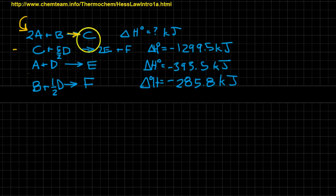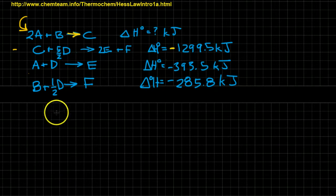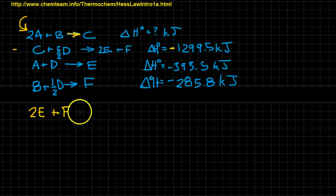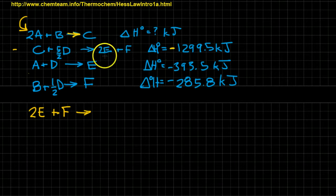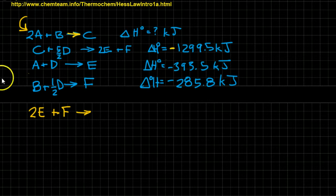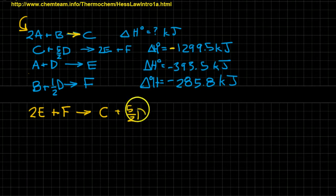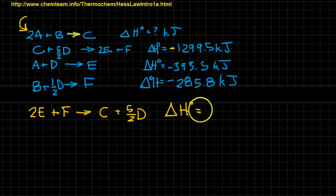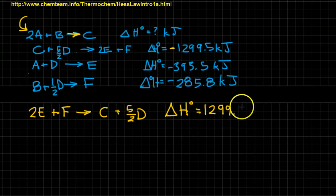So I'm going to start with this one first, because I want to flip that whole thing over, and then I'll get to the value I want. But if I do that, I have to change this negative sign to a positive. That's what happens when you flip them over. So I'm going to start with that. 2E plus F yields, because we're just doing it backwards, 2E plus F yields C plus 5 halves D. And that gives us this value right here, 1299.5 kilojoules. So far, so good. There's the first one down. So that gets my C over here.